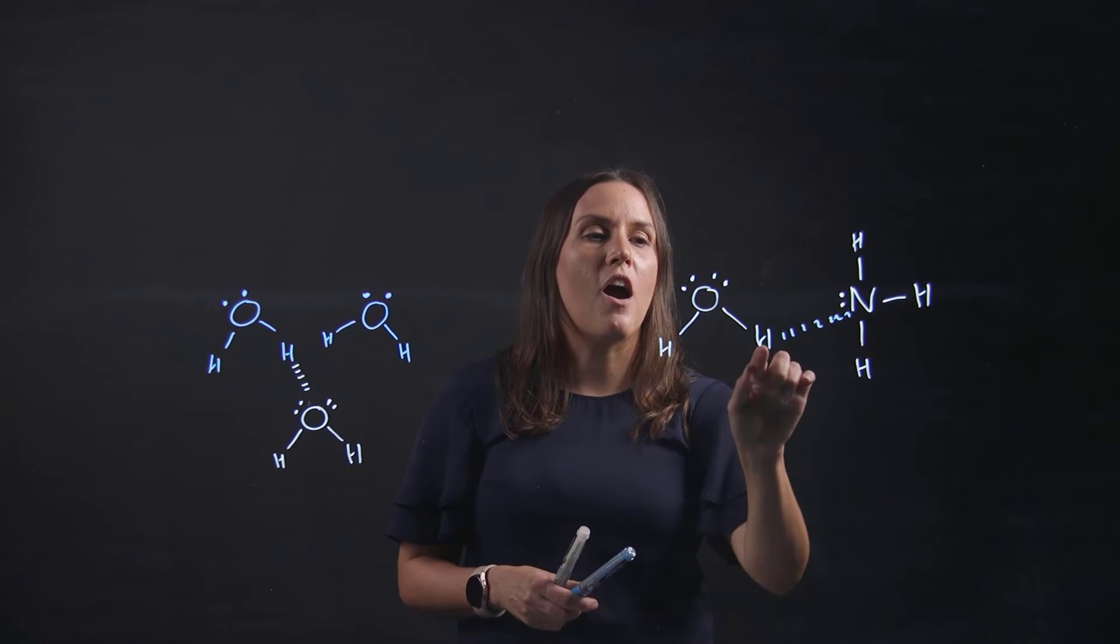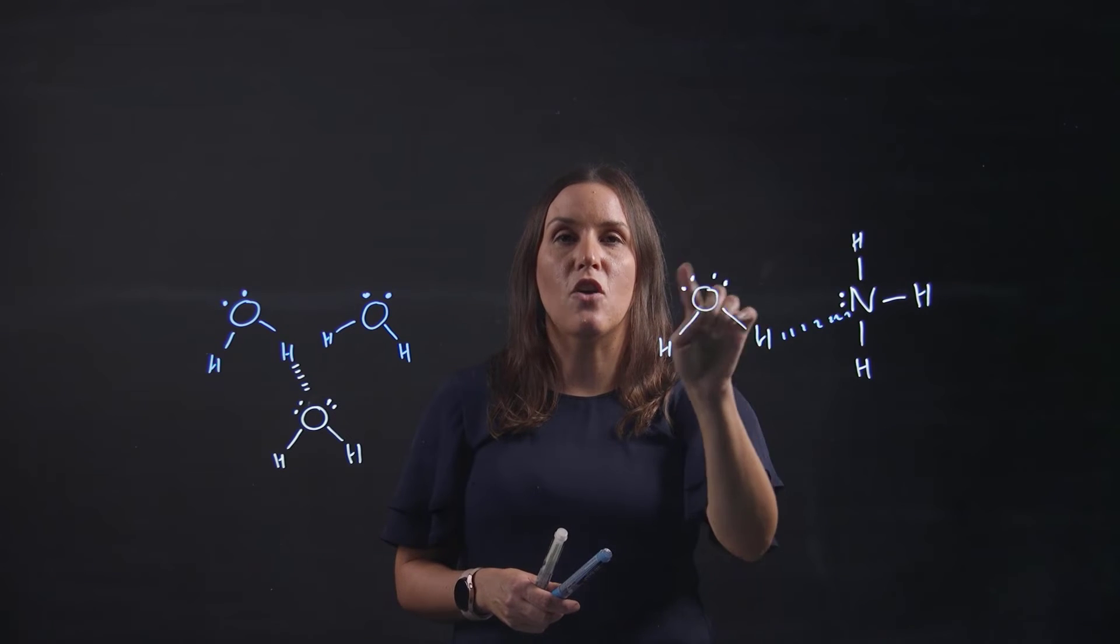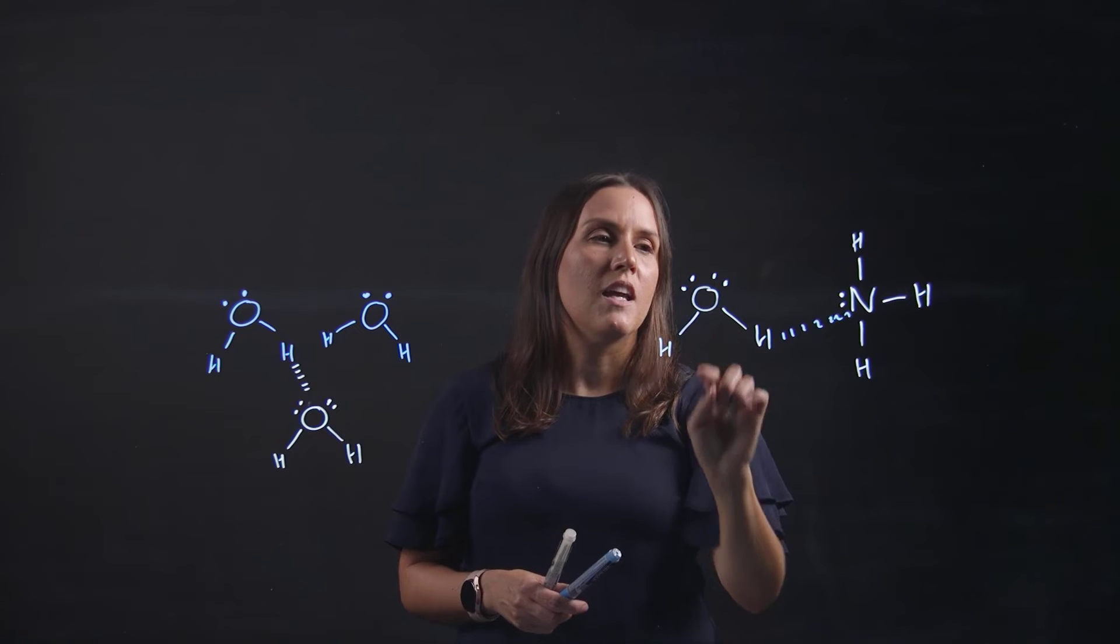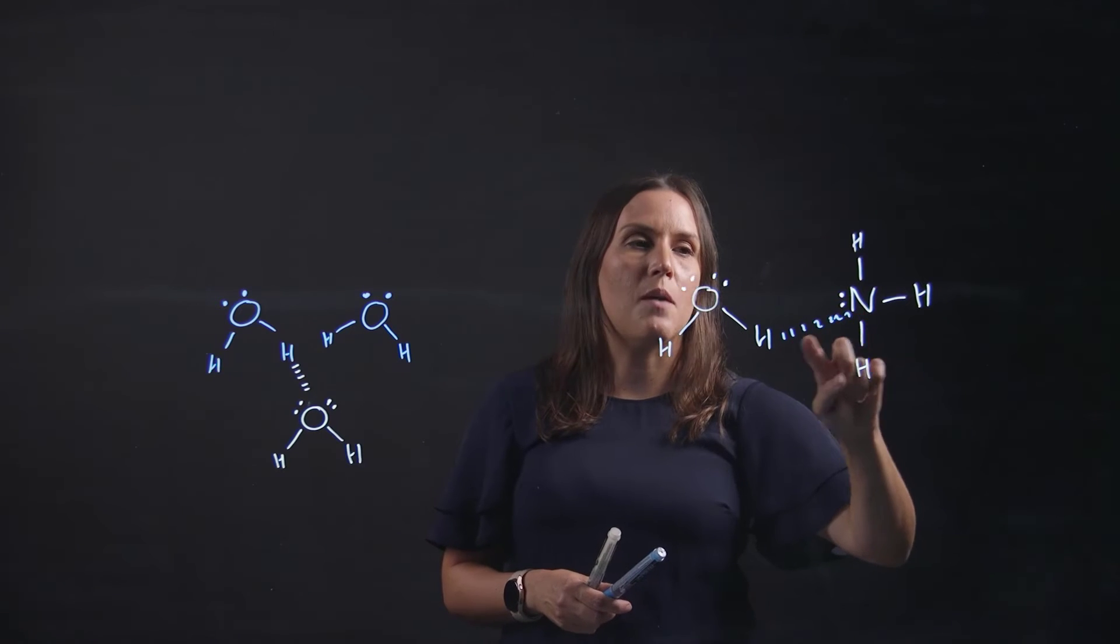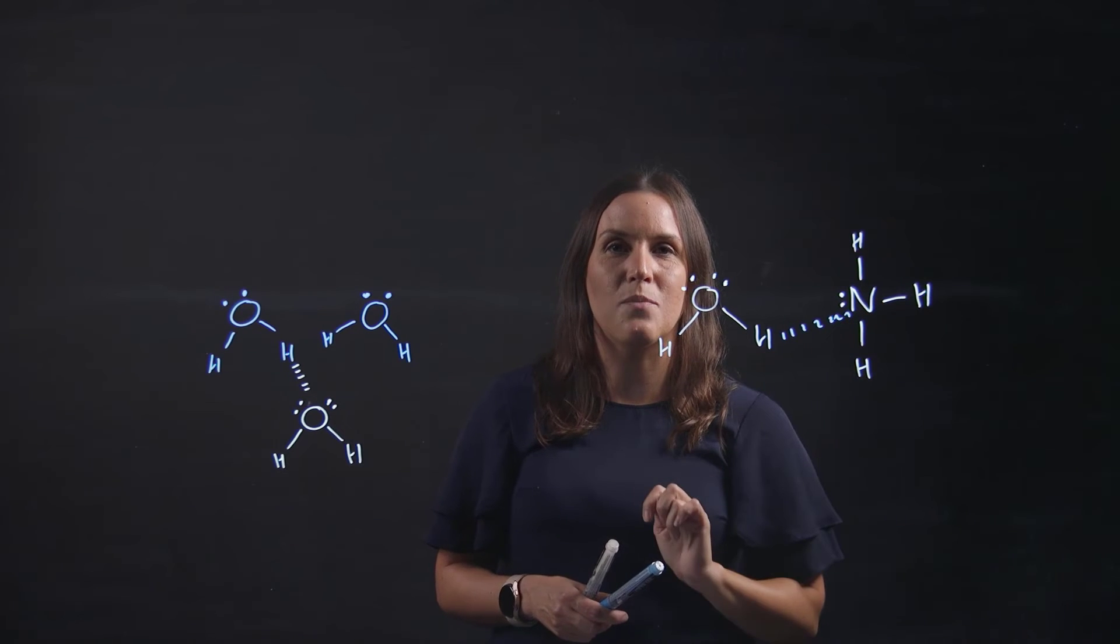Remember, the hydrogen that's attached to the electronegative atom covalently would be the donating functional group, so the hydrogen bond donor, and the one that's accepting in that partial bond is the hydrogen bond acceptor. So the NH3 is a hydrogen bond acceptor.